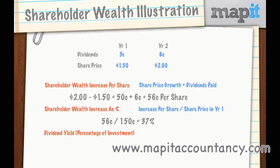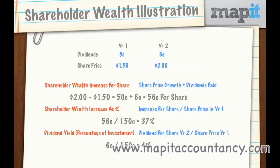Lastly, we're looking for the dividend yield — basically what the investment is yielding us, like an interest payment. That is the dividend per share in year two over the share price in year one. Because to get that 6 cents, we'd need to have invested in year one. So that will be 6 cents over 150 cents, which is 4%. Make sure you know how to calculate shareholder wealth increase per share, the shareholder wealth increase as a percentage, and the dividend yield — these are all things that investors will look at to assess whether the business has achieved its financial objectives.